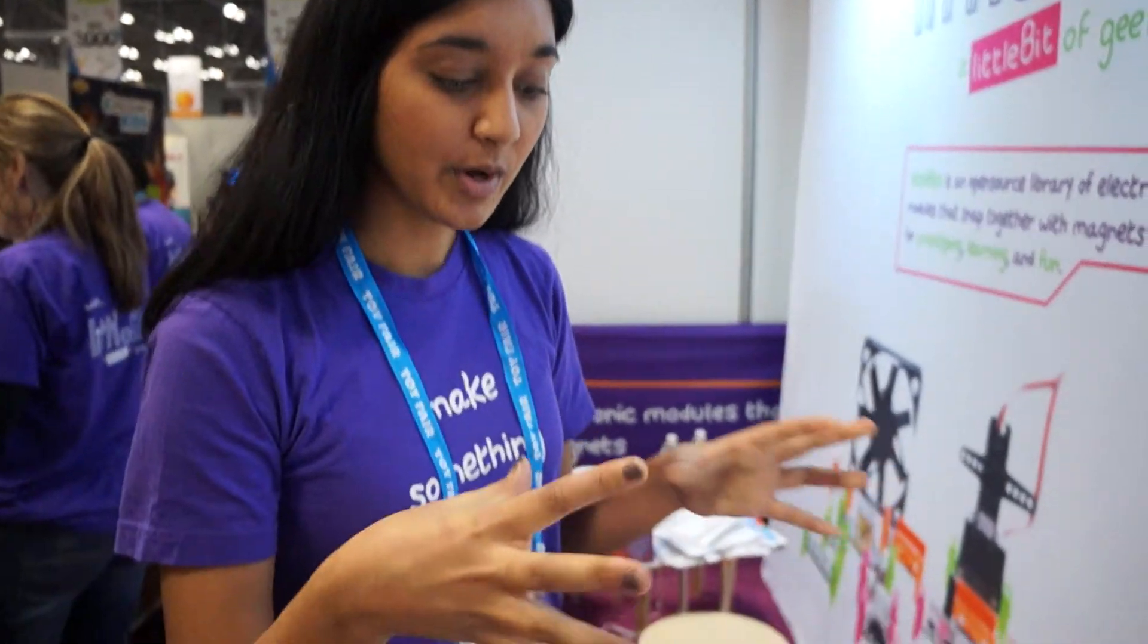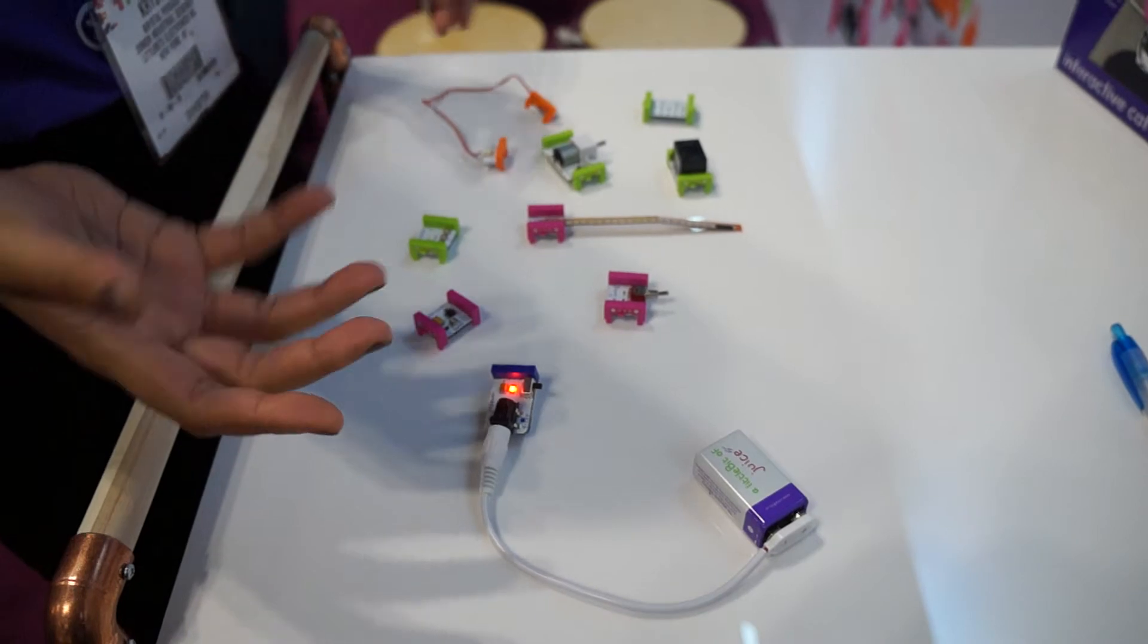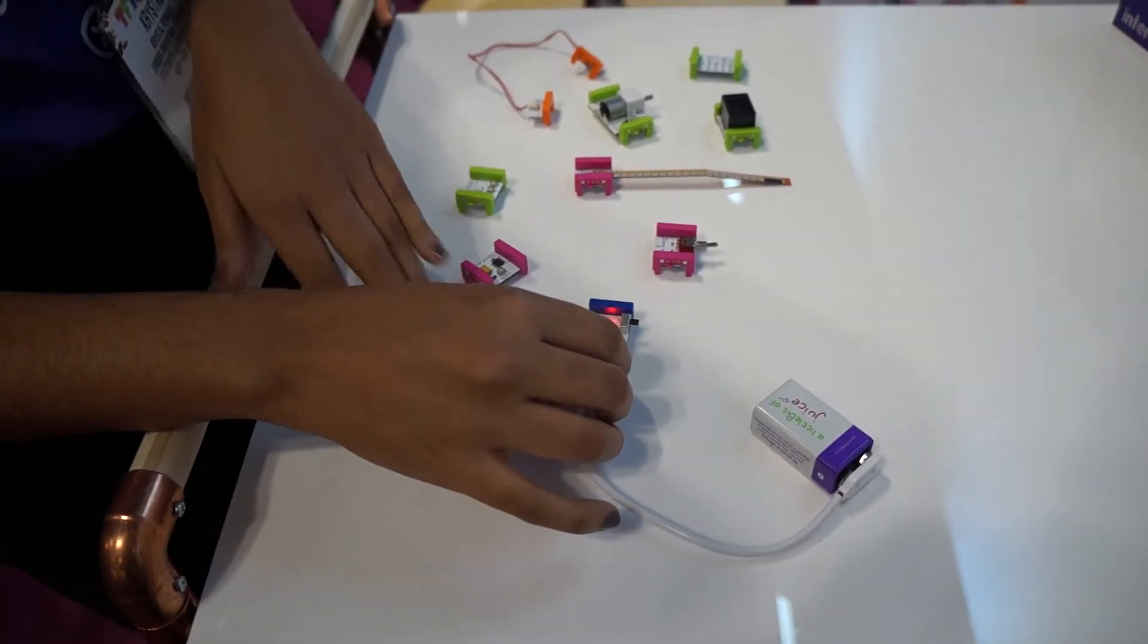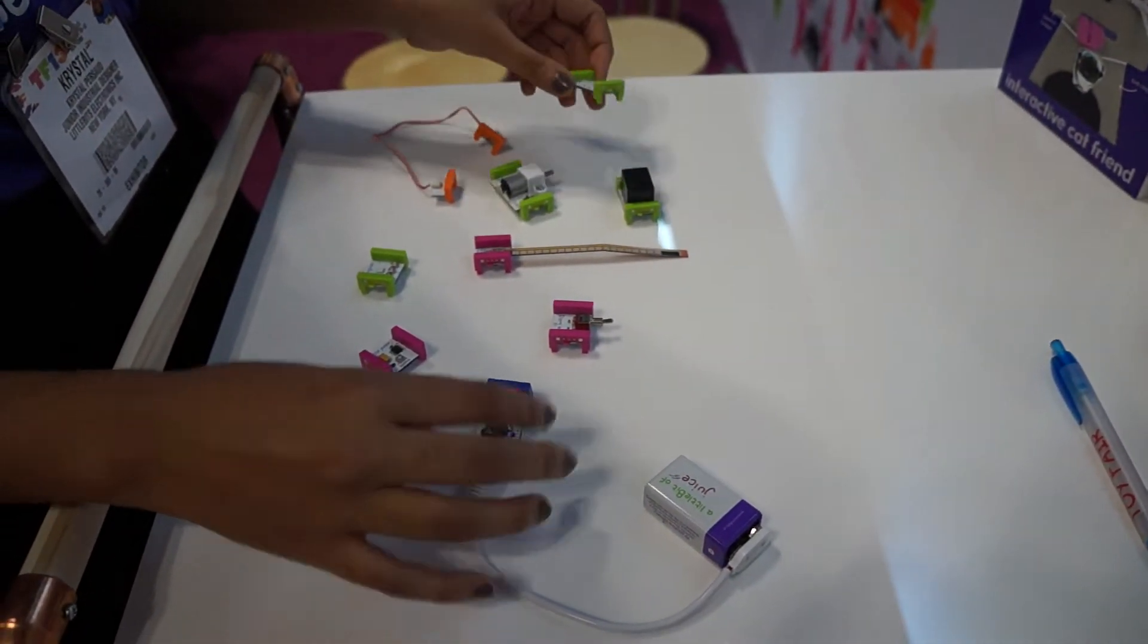Hi, I'm Crystal. I'm a junior industrial designer at Little Bits. So Little Bits are electronic modules that snap together with magnets. All the blue bits are power bits so use that to start off your circuit. Pink bits are input bits and green bits are output bits. So the green bits do things.